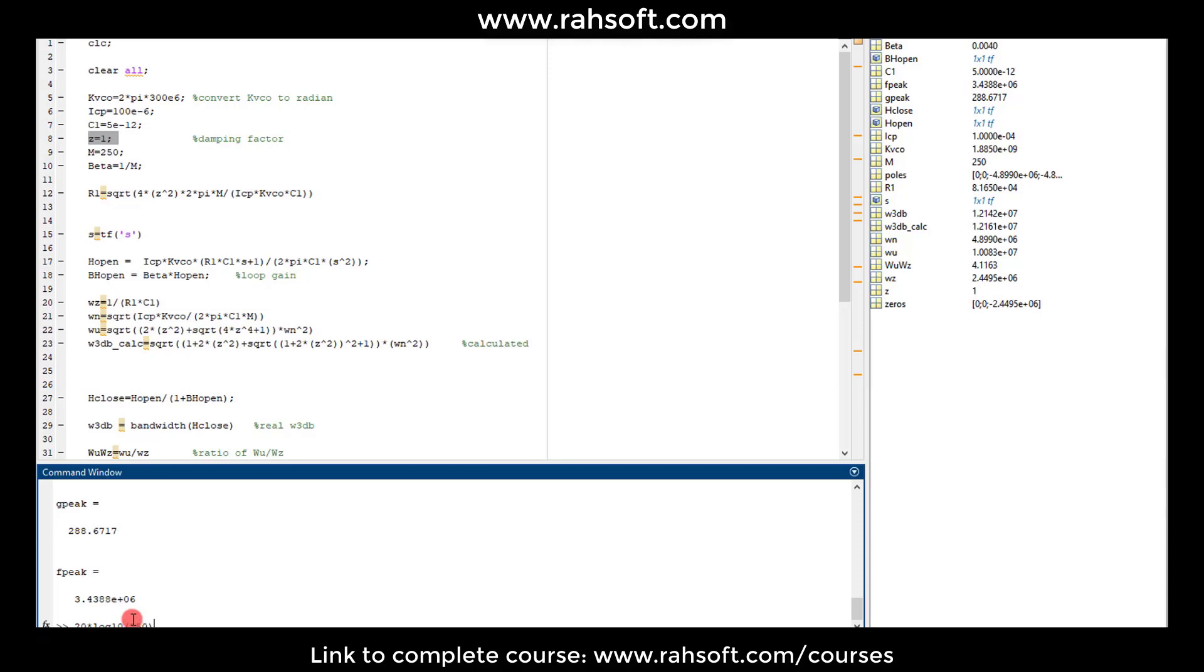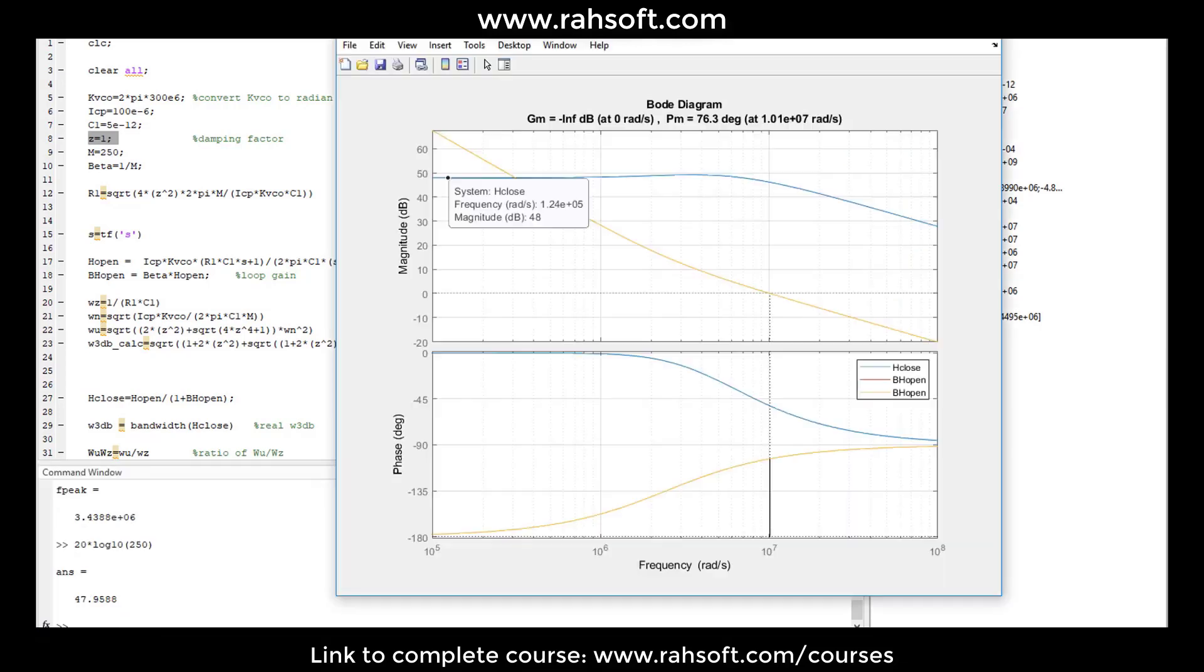I'm converting this to log. 250 is the value of M. And this should be 48. As you see, it's correct. So I have the DC gain of 48.